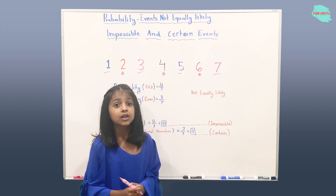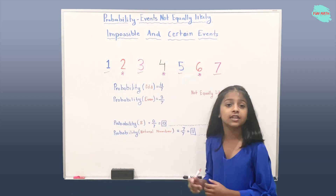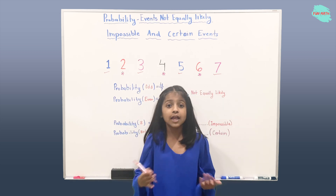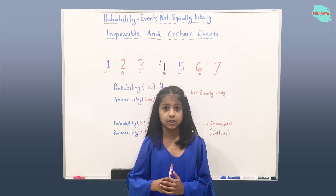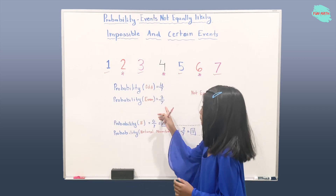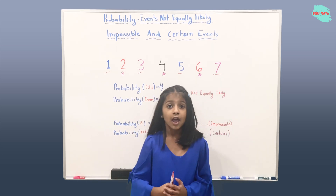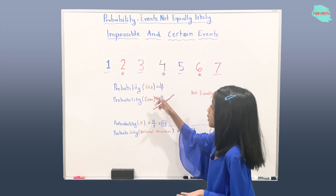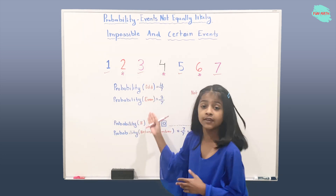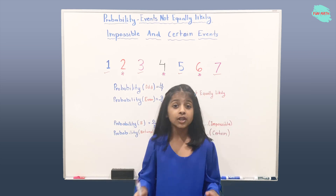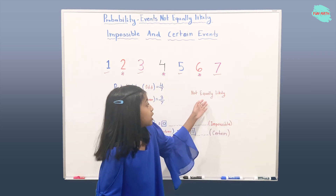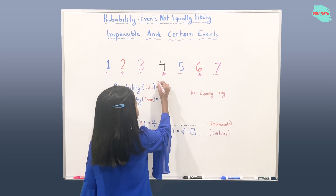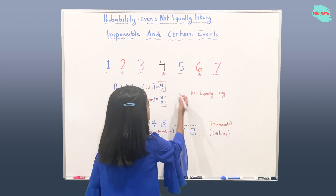Let's see why we got seven as a denominator. You can see that the total numbers here are seven, and those are all the possibilities. That's why we have seven as our denominator, which gives us three over seven. The probability of getting an odd number is four over seven, and the probability of getting an even number is three over seven. You can see that they're not equally likely events, so we call them not equally likely events.